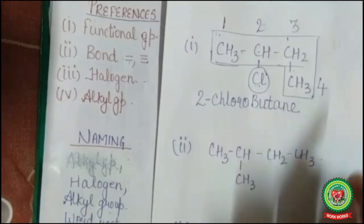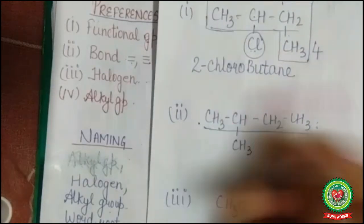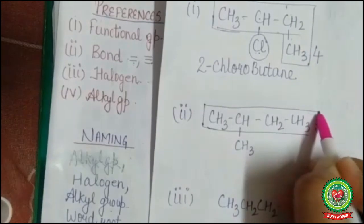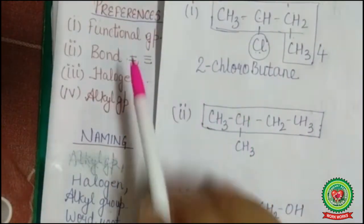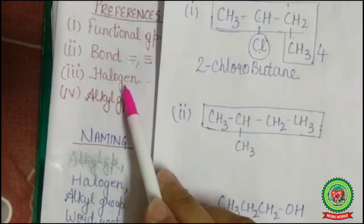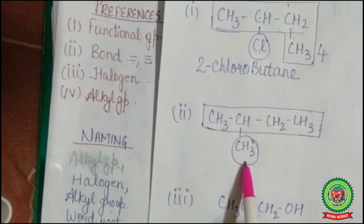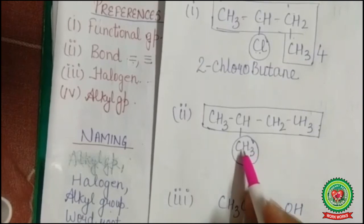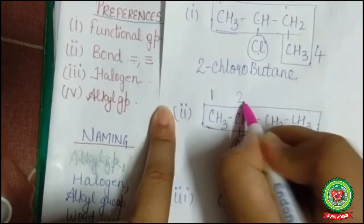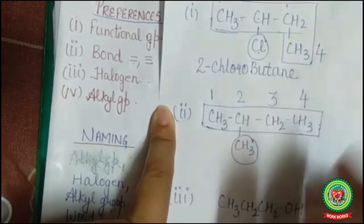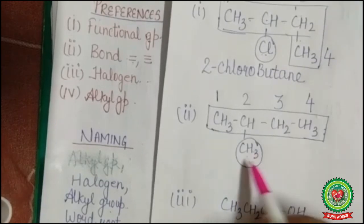For the next example: chain selection — straight chain, first carbon to last carbon, no carbon attached to first or last, so this is my straight chain. For numbering, we check preferences: no functional group, all single bonds, no halogen. There is an alkyl group — CH₃, which is known as methyl. The alkyl group will get the smallest number, so numbering starts from here: one, two, three, four.